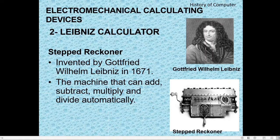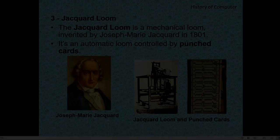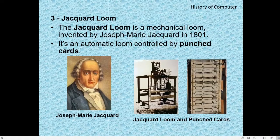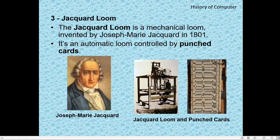The third Electro-Mechanical Calculating Device is the Jacquard Loom. The Jacquard Loom is a mechanical loom invented by Joseph Mary Jacquard in 1801. It is an automatic loom which is controlled by punch cards. You can see the picture of the Jacquard Loom here.